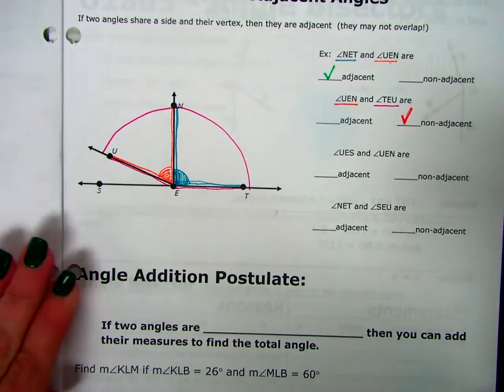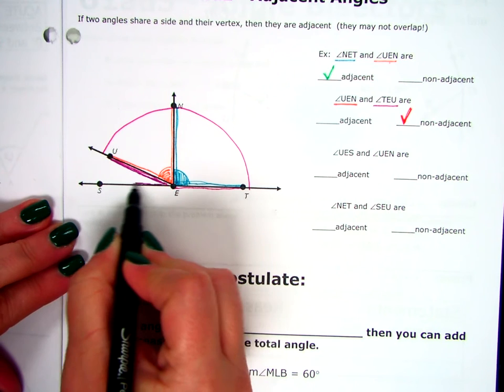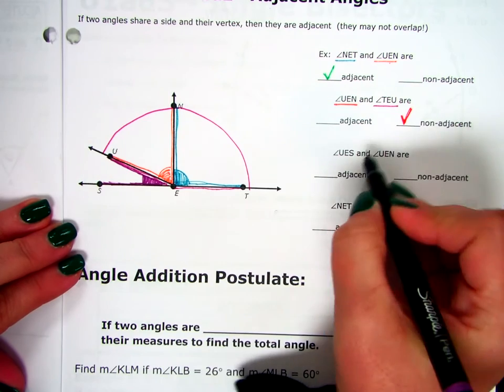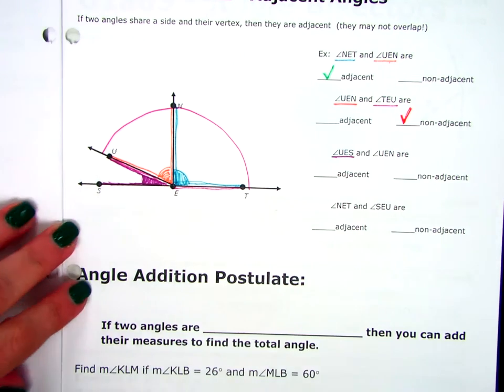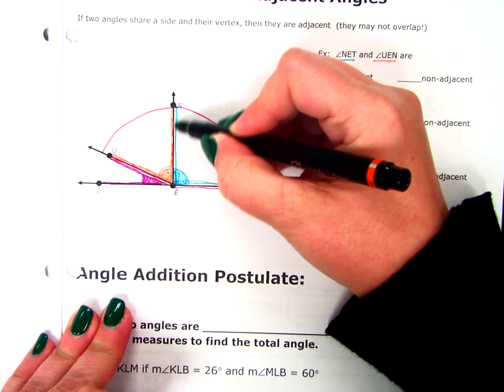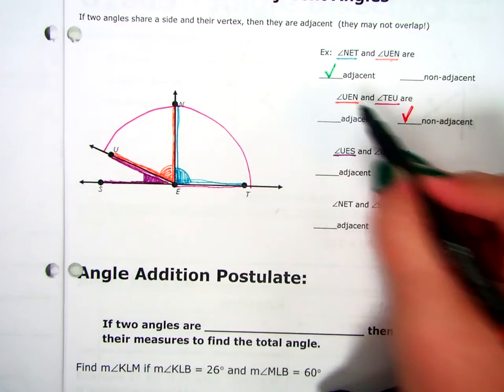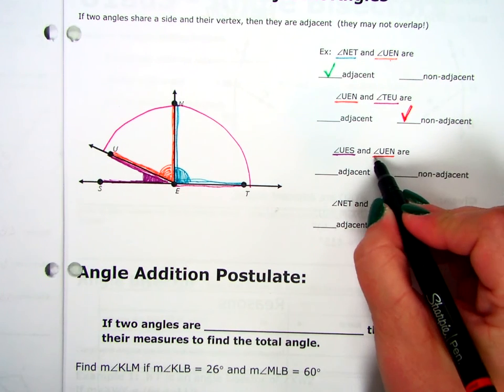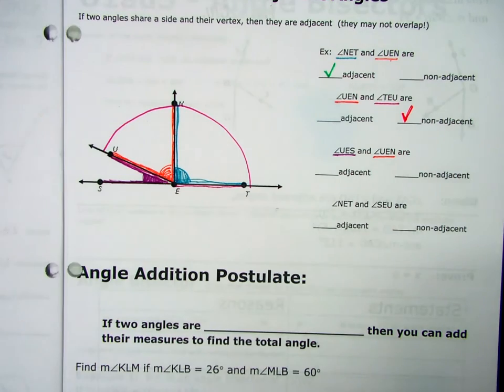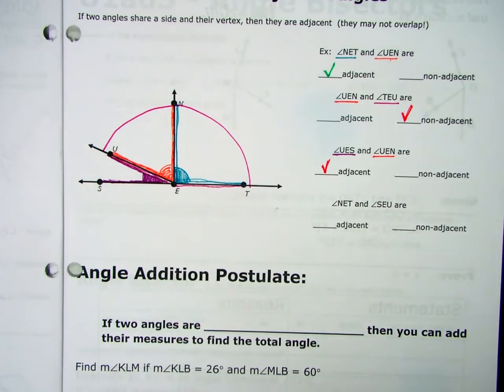All right. Then we're going to have angle UES. UES is this purple angle right here. And UEN. UEN is that orange angle again. They just went N-E-U. It's still that orange one. So that purple line on the bottom and the orange one. Adjacent or non-adjacent? Adjacent. They are right next to each other.